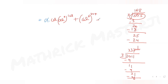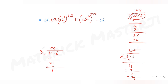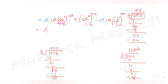For ω^1516: dividing 1516 by 3 gives quotient 505 remainder 1, so ω^1516 = (ω³)^505 · ω = 1^505 · ω = ω. Substituting back: α·ω + 1 - α·ω. The α·ω terms cancel each other out, leaving just 1.